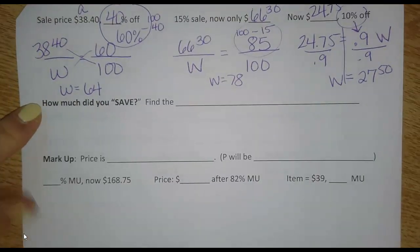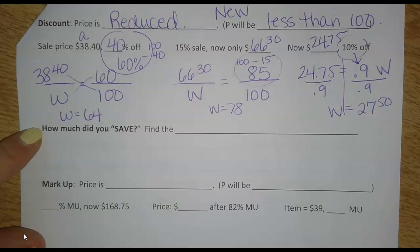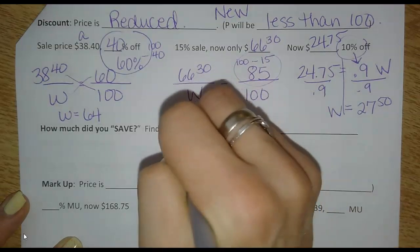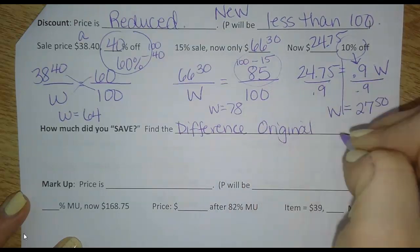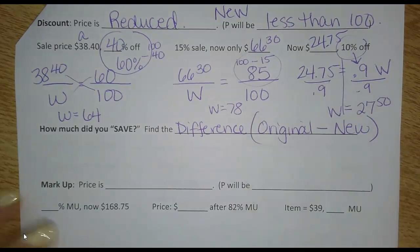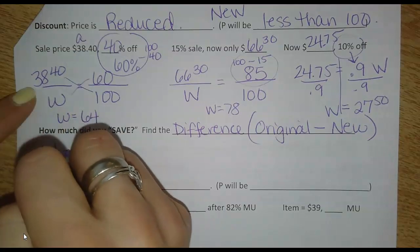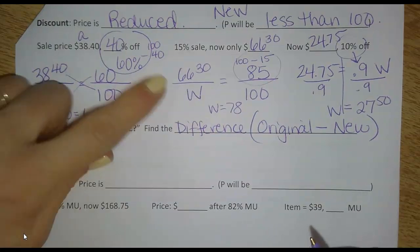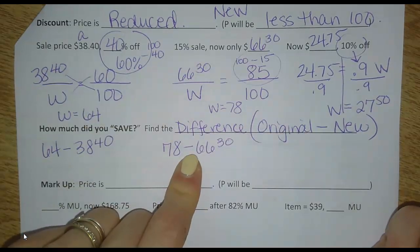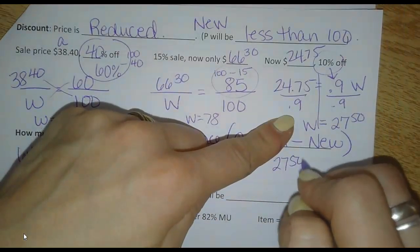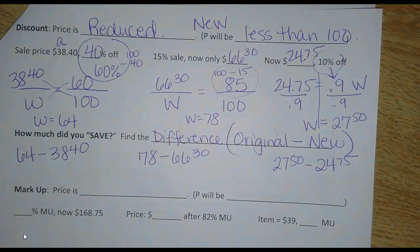Let's go on to this question. A lot of times the question might say, or you might want to know, how much did you save? You're like, great, it was on sale. How much did you save? Because you bought it on sale. Well, all you need to do is find the difference. Original minus new. Subtract them. Just subtract them to find how much money you saved. So, for example, in this one, I got the original price was $64, but I only paid $38.40. If I just subtract those, I'll figure out how much I saved. In this one, the original price was $78, but I only paid $66.30. Subtract those to figure out how much you saved. And in this one, the original price was $27.50, but I only paid $24.75. Subtract those to figure out how much you saved. That's the easiest way.